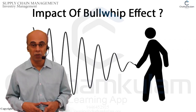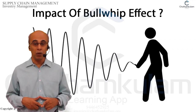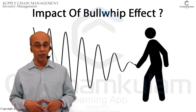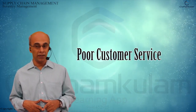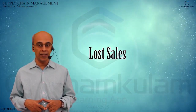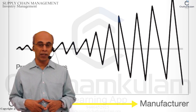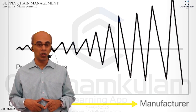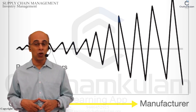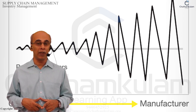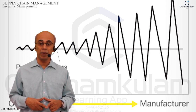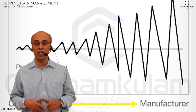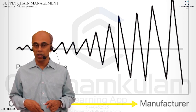The bullwhip effect leads to excess inventory, inefficient production, poor customer service, and lost sales, which may have a snowballing impact on operational costs. This can be partially overcome through a vendor-managed inventory system, just-in-time replenishment, and demand-driven materials requirements planning, or MRP.